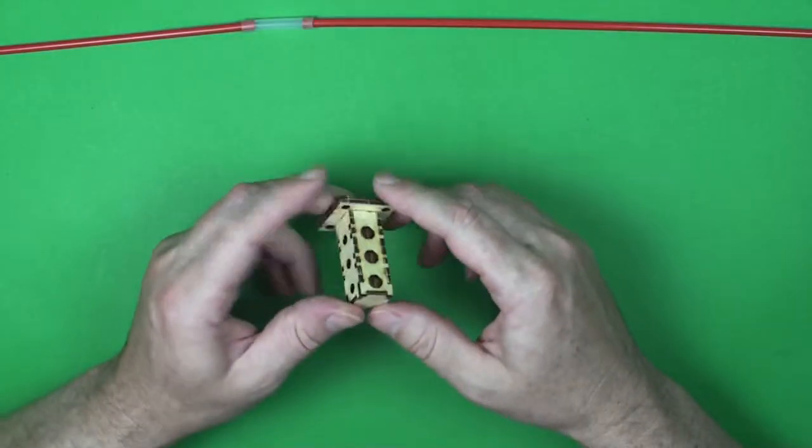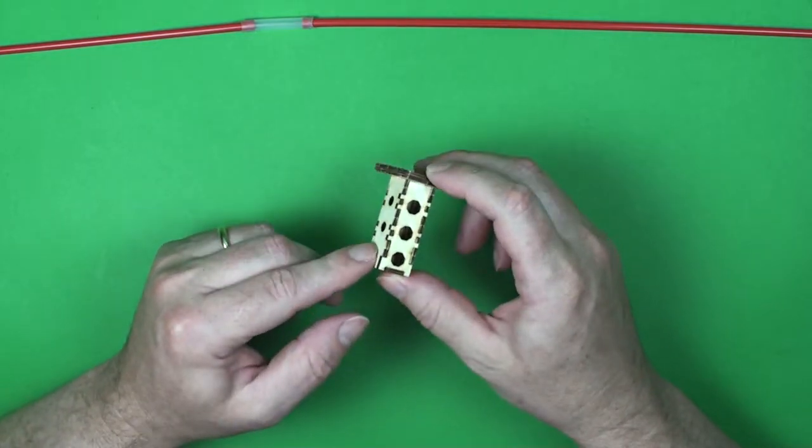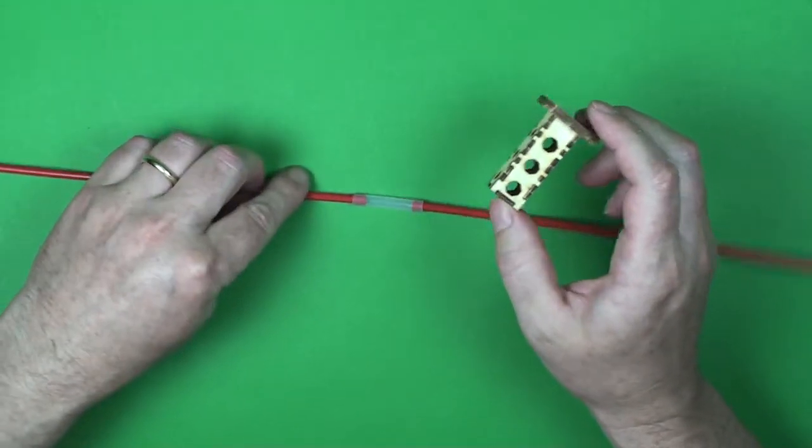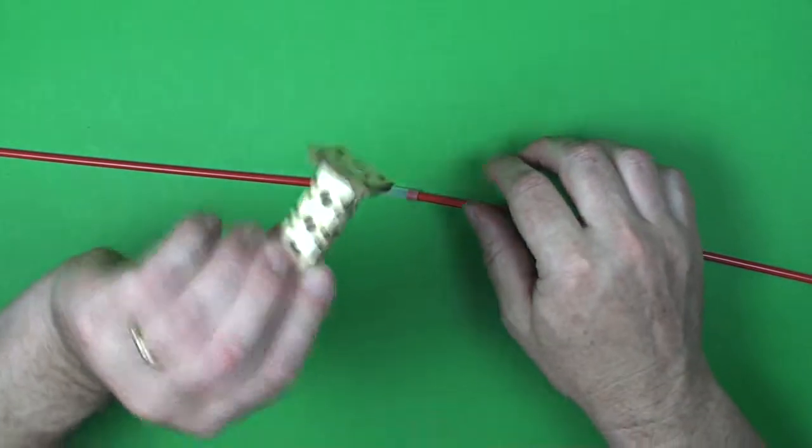It serves a couple of purposes. If you're running your control rod a long way it gives it the support it'll need and allows you to connect lengths of control rod together. So that's our little hanger.